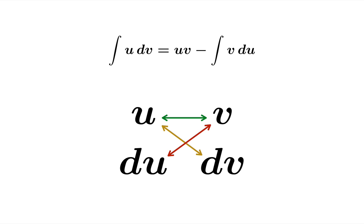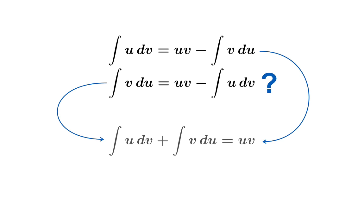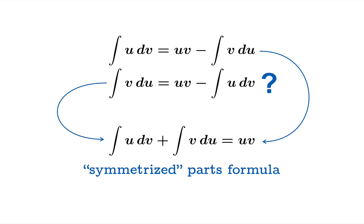You could ask: what if in the original choice I had chosen v du to begin with — would I get a different formula? Well, yes — but you can take either formula and solve for the same symmetrized relationship. Whether you call the original thing u dv or v du, if you apply the process you'll get to a correct statement.